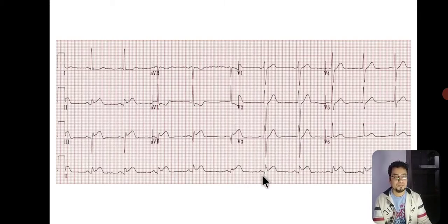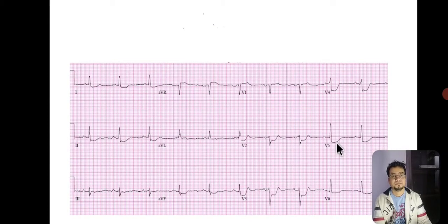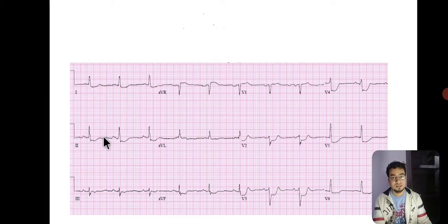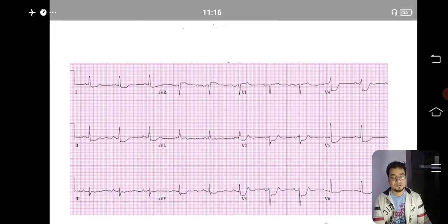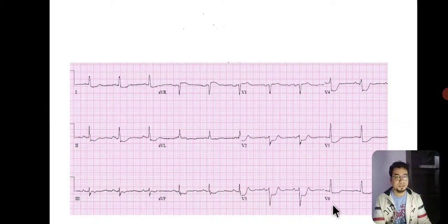Inferior wall MI usually presents with sinus bradycardia, bradyarrhythmia, or sometimes AV blocks, so you need to check the PR interval as well — in this case the PR interval is probably normal. Now look at this ECG: the ST segments are depressed in various leads, especially leads 1, 2, 3, and V2 through V6. Multiple global ST depression is a sign of myocardial ischemia and may be a harbinger of acute MI.